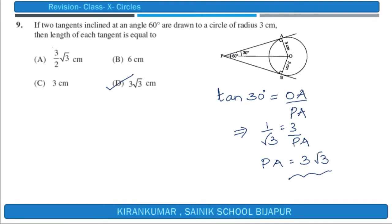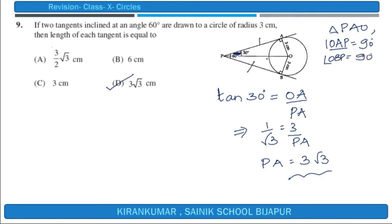The question arises: why did I consider this to be 30 degrees? Observe triangle PAO — we know that radius is perpendicular to the tangent, so angle OAP is 90 degrees. Similarly, angle OBP is 90 degrees. The two sides are equal and there is a common side, so both triangles are congruent. Hence these two angles are equal, each being 30 degrees, making the included angle 60 degrees. Therefore I took the trigonometric ratio with respect to 30 degrees.